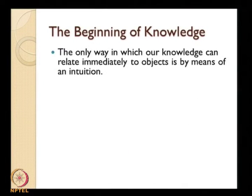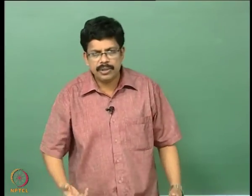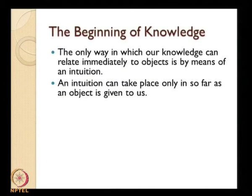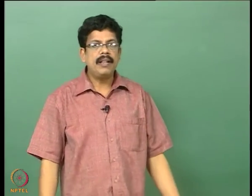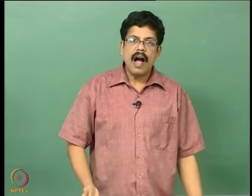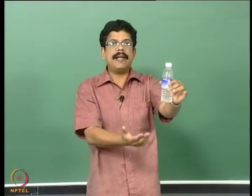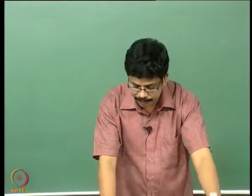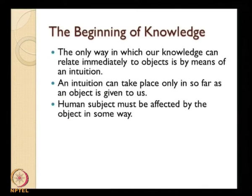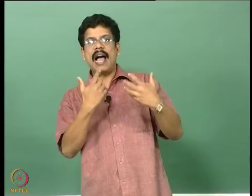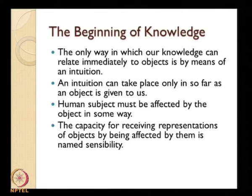The beginning of knowledge: the only way our knowledge can relate immediately to objects is by means of intuition — some sort of sensible sensation. An intuition can take place only so far as an object is given to us. There should be something in the outside world; for example, an actual water bottle should be there in the world. The human subject must then be affected by the object in some way. The capacity for receiving representations of objects by being affected by them is named sensibility.